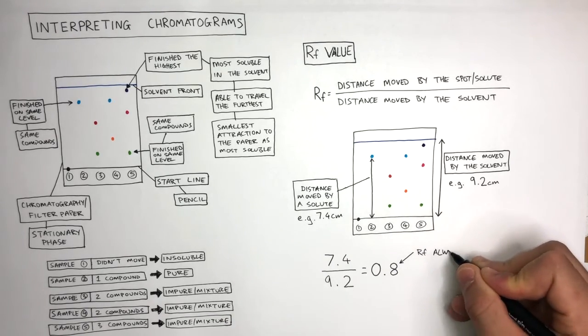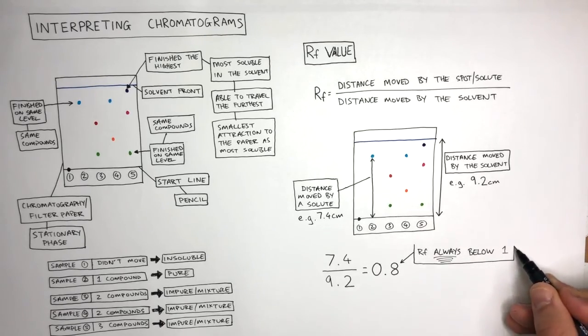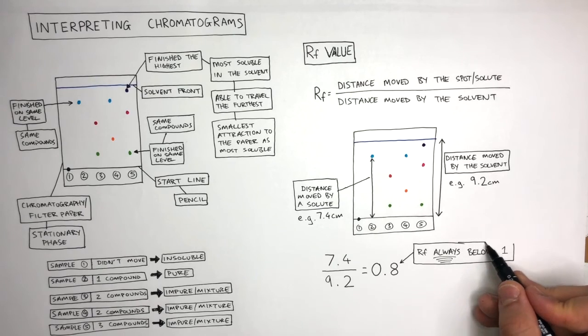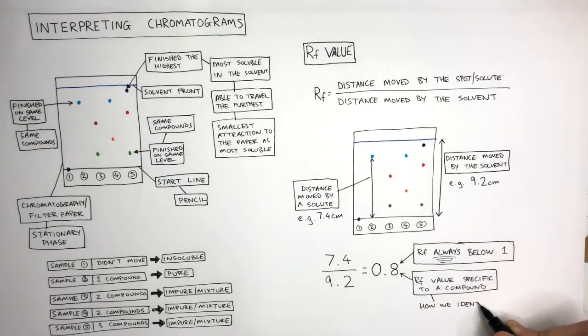The RF value is always below 1, so if you ever get a number above 1, you know automatically that it's wrong. And this RF value is very specific to a compound. It's how we identify the compound in unknown substances.